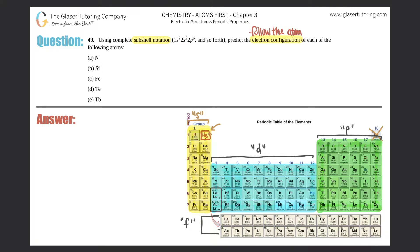I think we did three electron configuration problems previously. All I do is literally go from one — and one is always hydrogen — so you basically play like chutes and ladders. You start from number one and go through every spot until you reach the atomic number of your element. Let's start with part a: we want to go to nitrogen, which is number seven, so I have to start from one and get to seven.